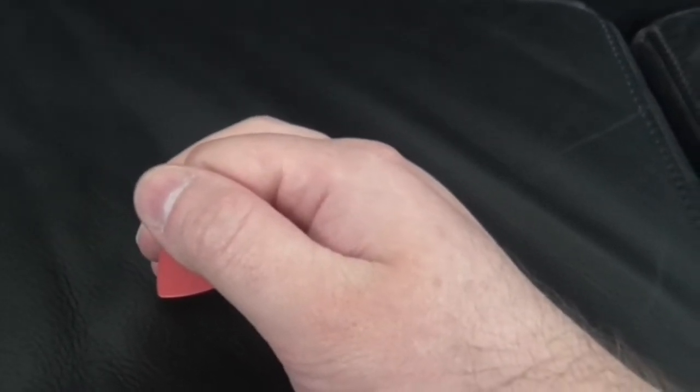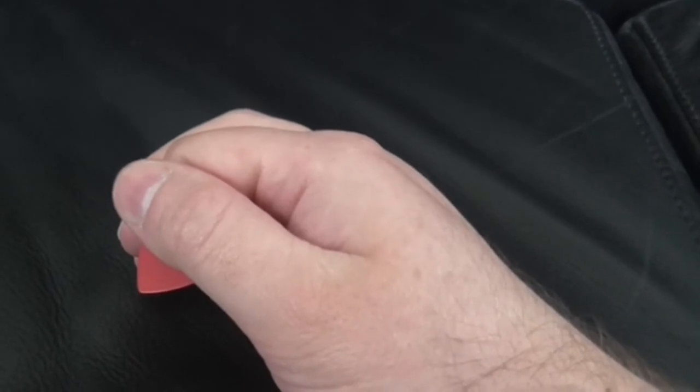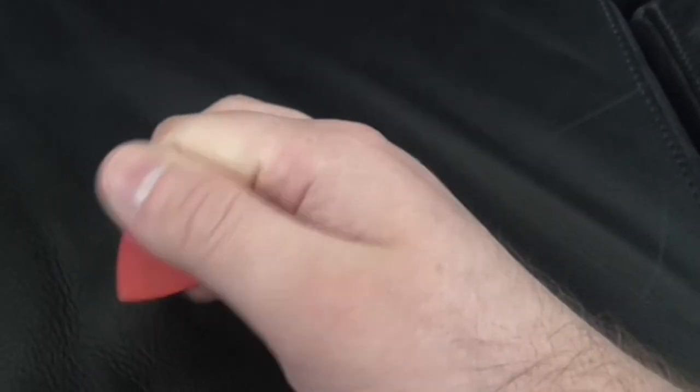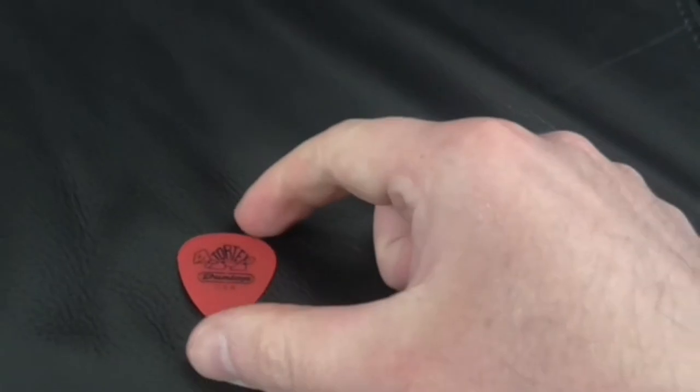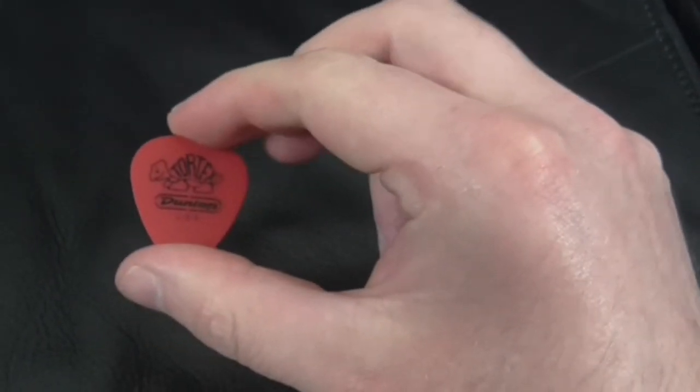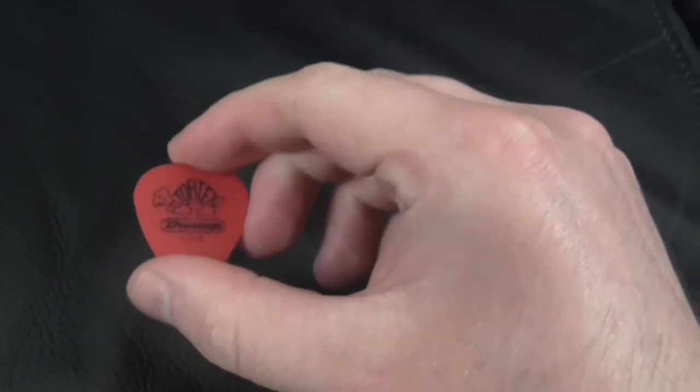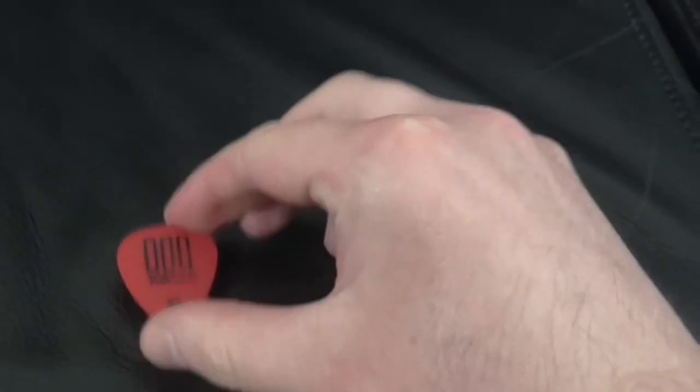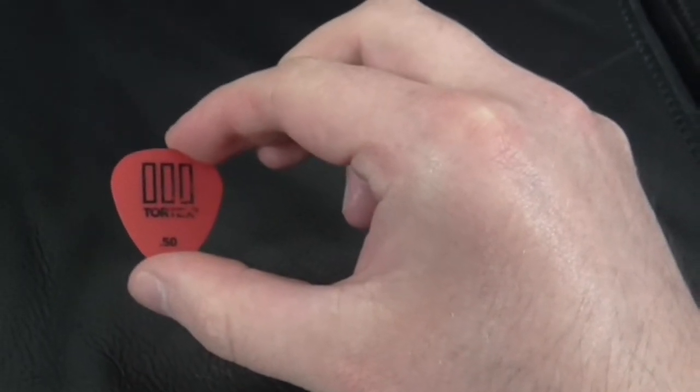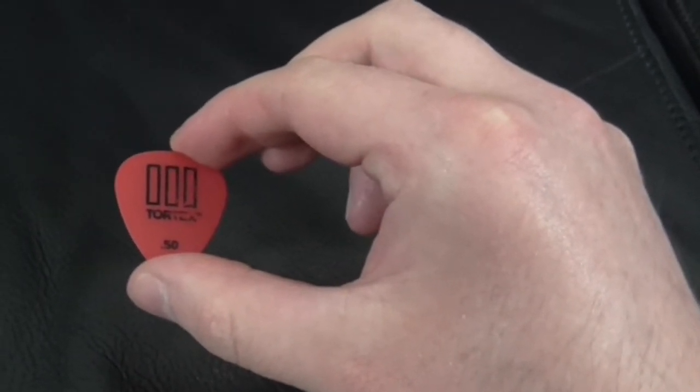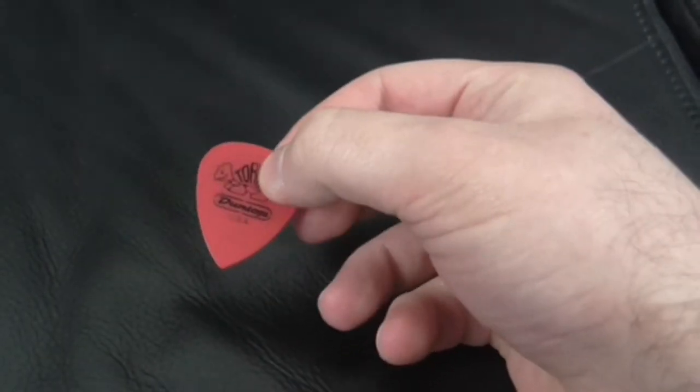So I'm using this little pick here. This is a really good acoustic pick, 0.5 millimeter Jim Dunlop Tortex, and I like these ones because they're nice and pointy.